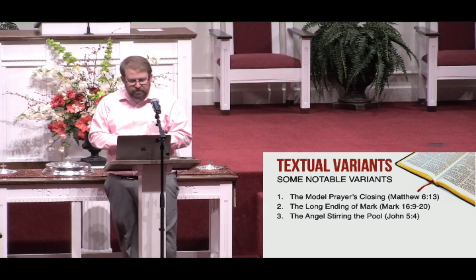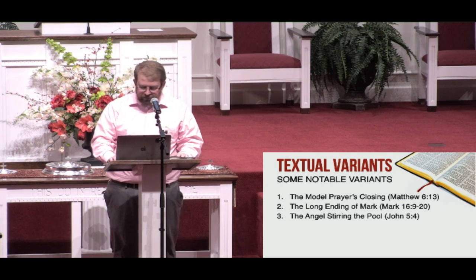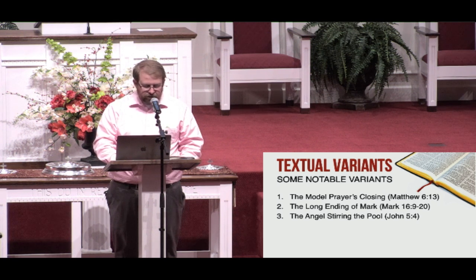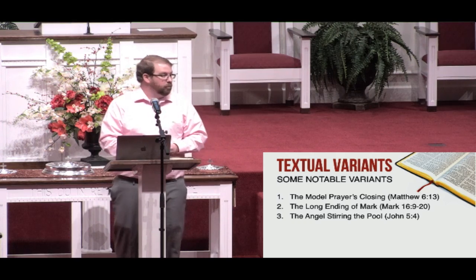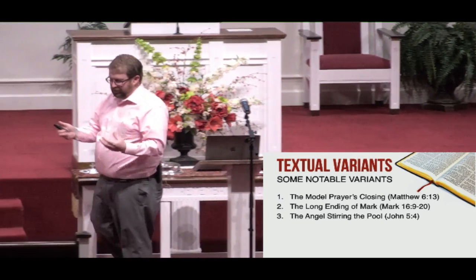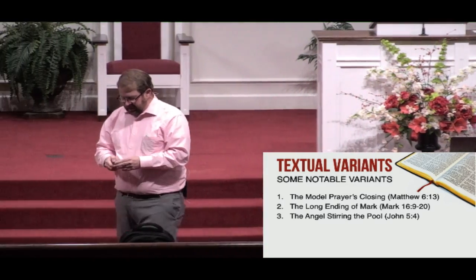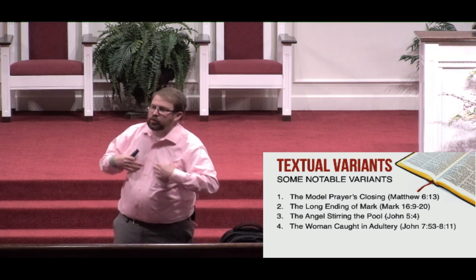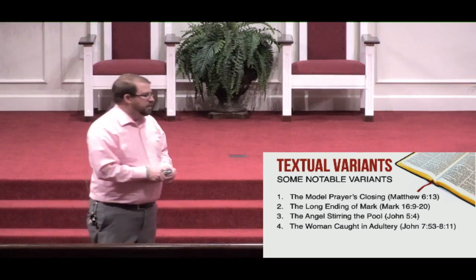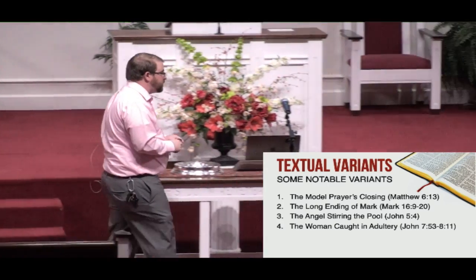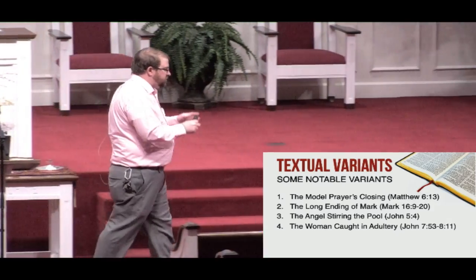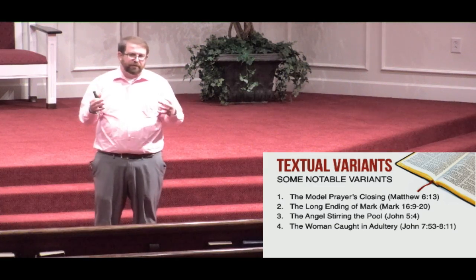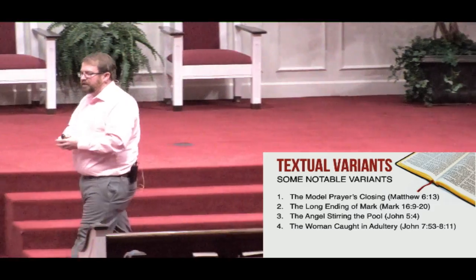Now we come to what I consider the most famous textual variant in all the Bible — John chapter 7 verse 53 through John chapter 8 verse 11 — the story of the woman caught in adultery. In scholarly circles it's often called the pericope adulterae. It's a story we find phenomenal because Jesus demonstrates such powerful forgiveness. Let's read it quickly from the English Standard Version.